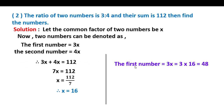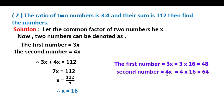Therefore the first number is 3x, and x is equal to 16, so 3 into 16 is equal to 48. And the second number is 4x, so 4 into 16 equals 64. So the numbers are 48 and 64.